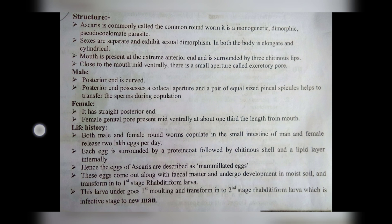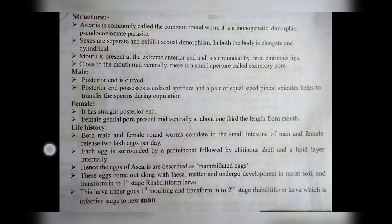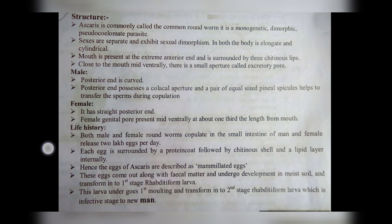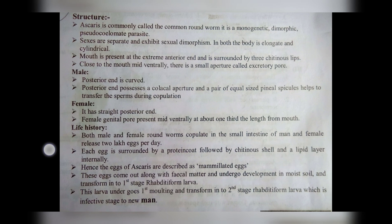Let us discuss the male structure of Ascaris. The posterior end is curved. The posterior end possesses a cloacal aperture, and a pair of equal-sized penial spicules helps to transfer the sperms during copulation. Copulation is the crossing between male and female to form an embryo or zygote.